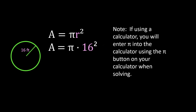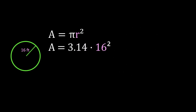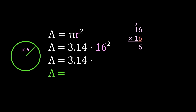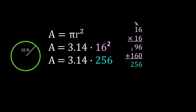If you're using a calculator, you'll enter pi using the pi button on your calculator when solving. The rest of us will use 3.14 times 16 squared. We'll start our calculations with 16 squared, so 16 times 16: 6 times 6 is 36, 6 times 1 is 6 plus 3 more is 9, then multiply by the 1 — 1 times 6 is 6, 1 times 1 is 1 — and we add: 6 plus 0 is 6, 9 plus 6 is 15, and 1 plus 1 is 2, so 16 squared is 256.